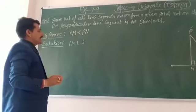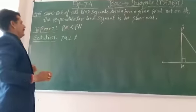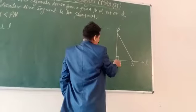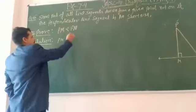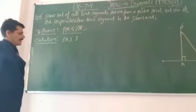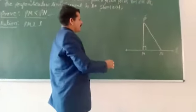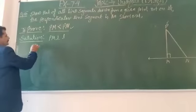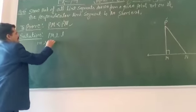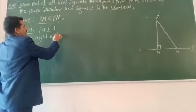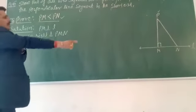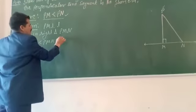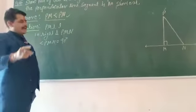We have to prove it. This is our right triangle. This right triangle is P, M, N. Angle PMN will be equal to 90 degrees.